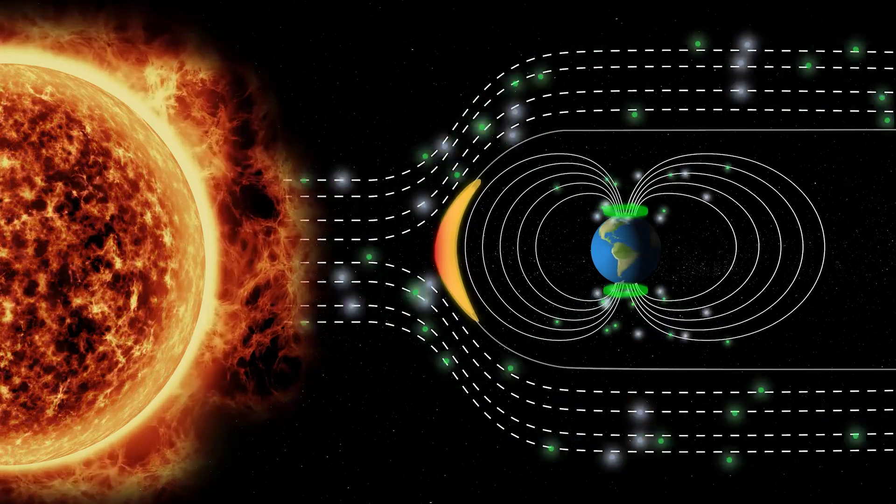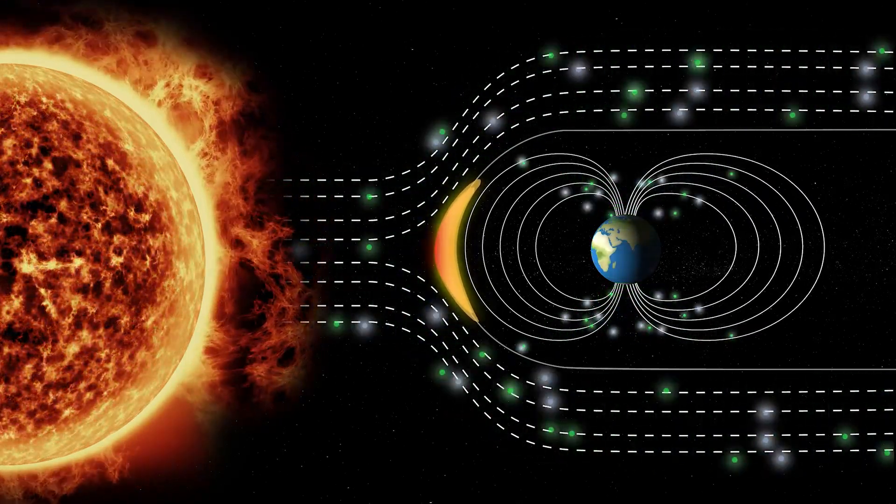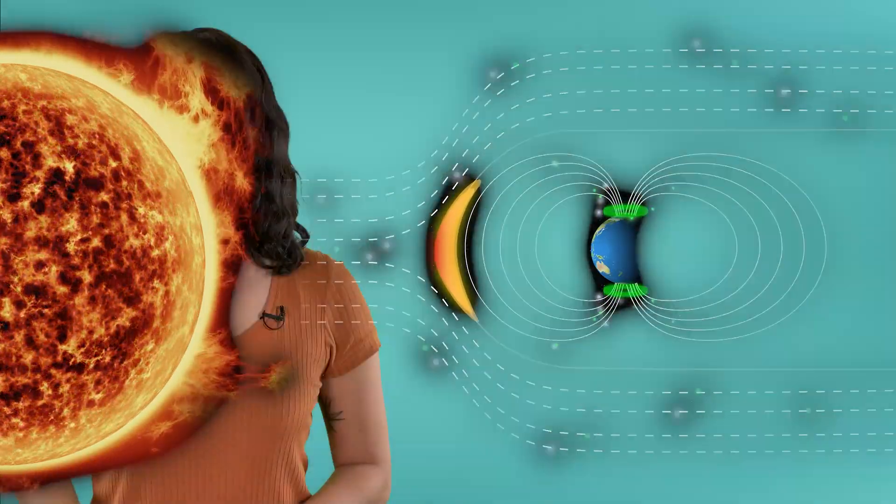During very intense activity, they might be visible at lower latitudes as well. Luckily, the auroras are not dangerous to humans or animals, at least not in any direct way. But they can cause problems with much of the technology we rely on.